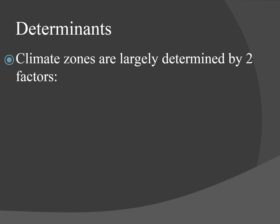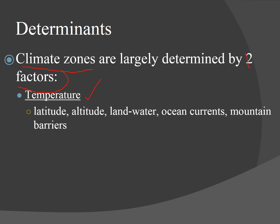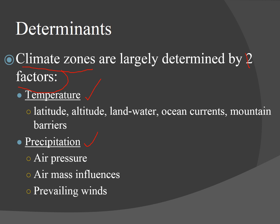Climate zones are largely determined by two factors. The first is temperature — including latitude, our location, altitude, whether we're by land or water, ocean currents, or if we're near mountains. So if you go to Florida, you're obviously near water, so it rains all the time, and the climate there is closer to the equator and more rainy. The second factor is precipitation, which also relates to air pressure, air mass influences, and prevailing winds.